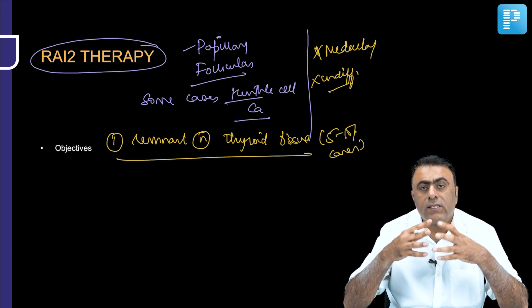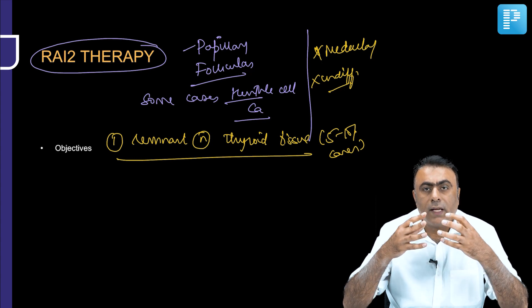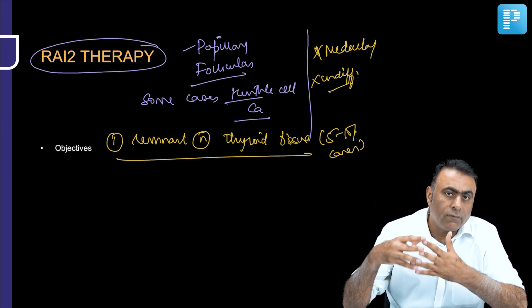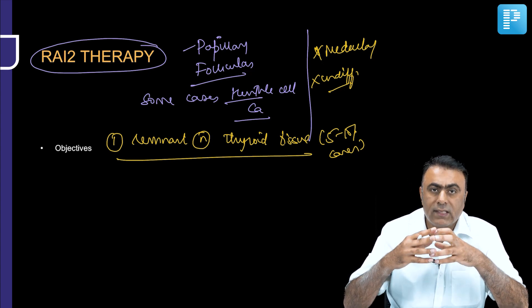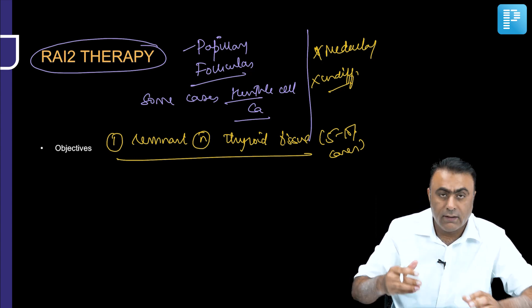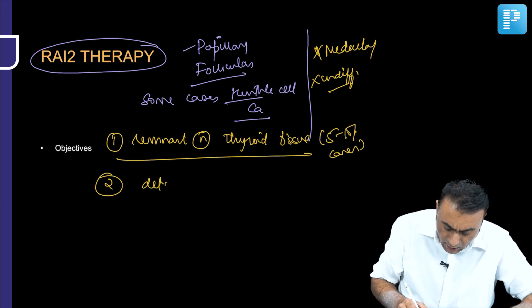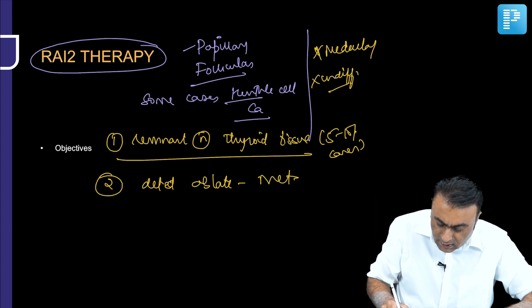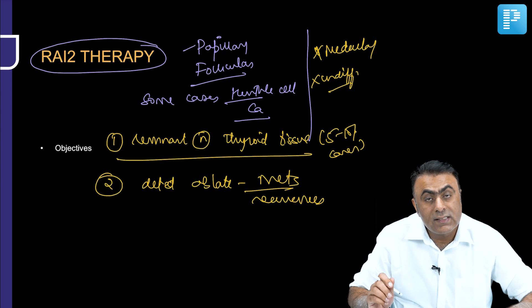Absence of normal thyroid tissue in the neck is also important for better utilization of thyroglobulin in monitoring these patients post-operatively. That is why it is important to detect this remnant normal thyroid tissue and, if present, ablate it. The second objective of radioactive iodine therapy is to detect and ablate any metastases or recurrences which cannot be handled surgically.